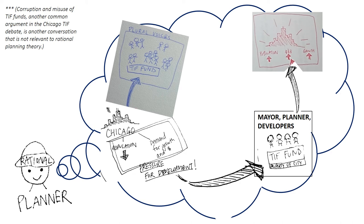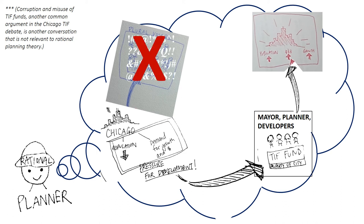For example, under advocacy planning, participatory planning, or communicative planning, the TIF distribution process would be significantly slower since there are different stakeholders that have different agendas with the TIF funding. Debate is typically present when there is a broad range of voices. Not only would the TIF allocation be slow, it is possible that under different types of planning, the potential development at hand will be dismissed because of the negotiations taking place. If TIF development projects were to not exist due to this inefficiency, the city as a whole would lose.